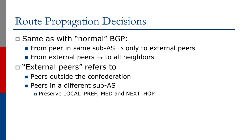The route propagation decisions within a confederation are the same as with normal BGP. From a peer in the same sub-AS, routes only go to external peers. From external peers, routes go to all neighbors. External peers refers to peers outside the confederation as well as peers in a different sub-AS. For peers in a different sub-AS, we preserve the local preference, MED, and next hop. This interesting EBGP behavior within a confederation is referred to by some operators as EIBGP, even though it isn't really formally defined.